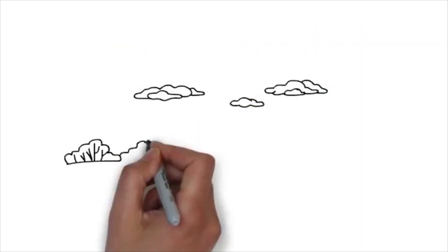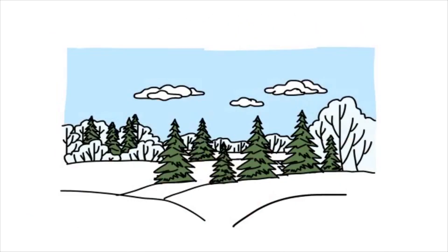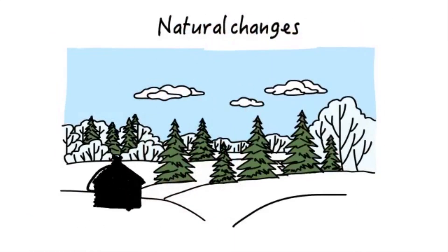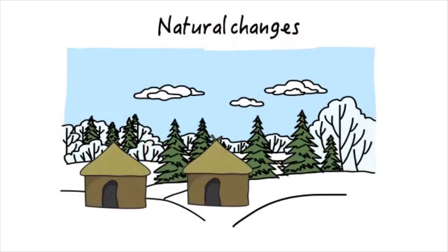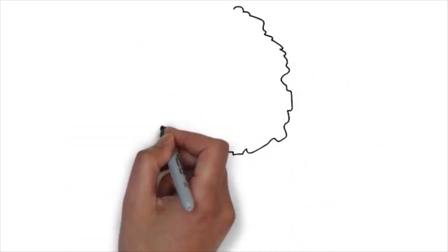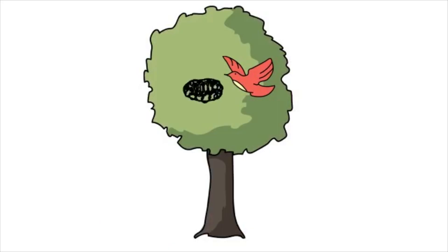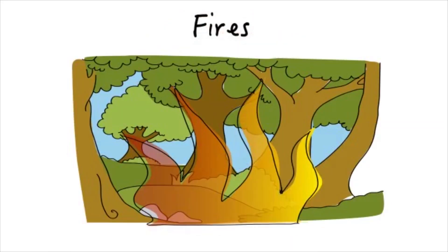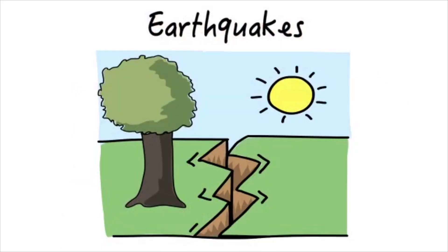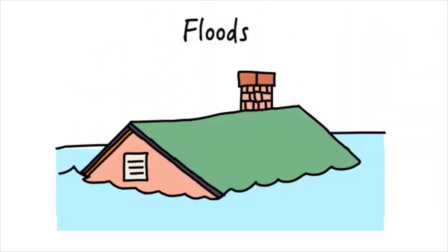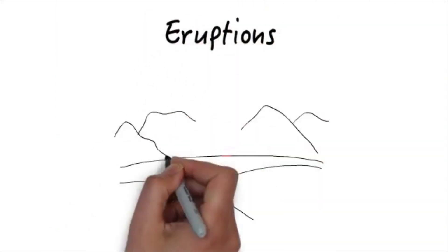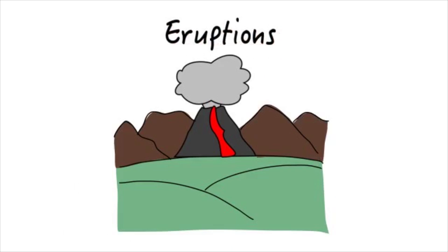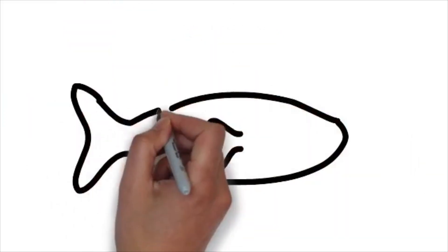Over time, an ecosystem may undergo natural changes. These changes may be caused by humans building houses or by animals constructing shelters. An ecosystem may be destroyed either by fires, earthquakes, floods, eruptions, or any other natural disaster. These changes may cause many damages to a species and can even lead to its death.